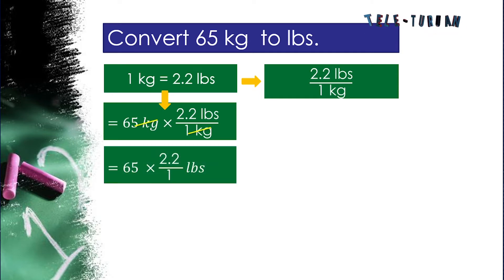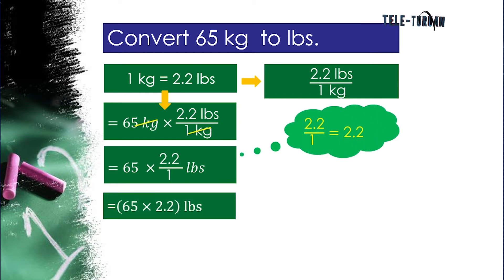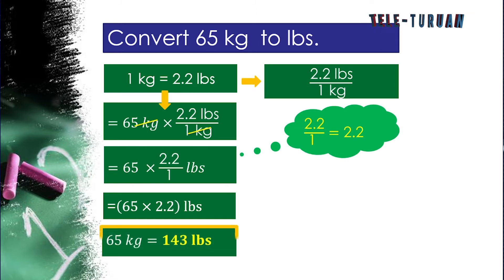Now let us simplify. 65 multiplied by 2.2 over 1 pound. What is 2.2 divided by 1? Correct, 2.2. Now we have 65 multiplied by 2.2 and that is 143 pounds. So the answer is 65 kilograms is 143 pounds.